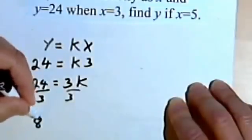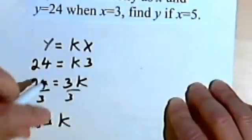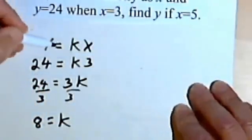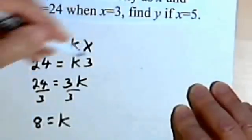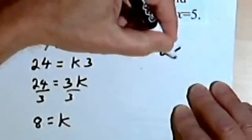And now what I'm going to do is find k. So I'll just divide both sides by 3. 24 divided by 3 is 8. So k is equal to 8. Now I can rewrite my general formula with the specific value for k. So y equals 8x.